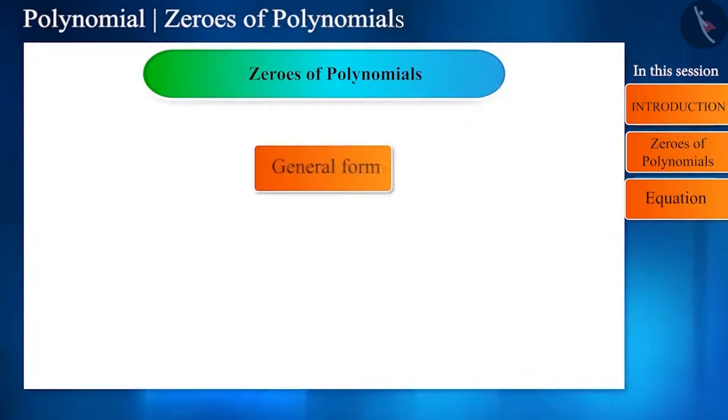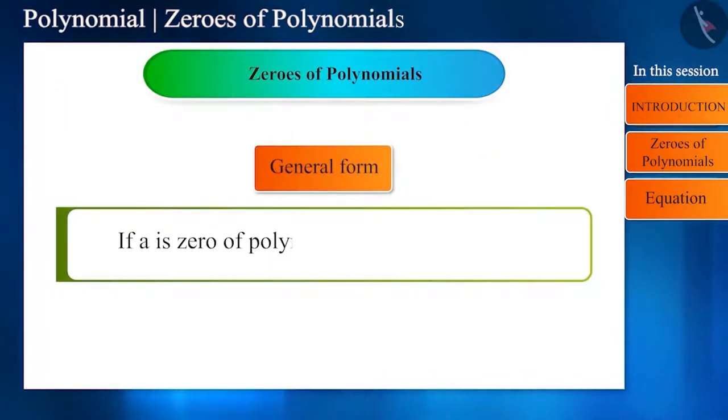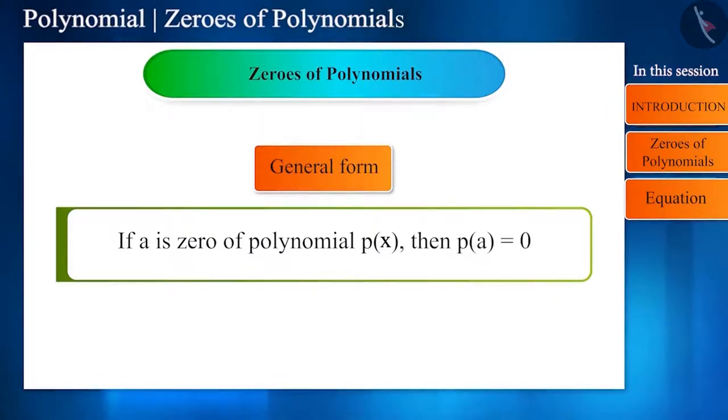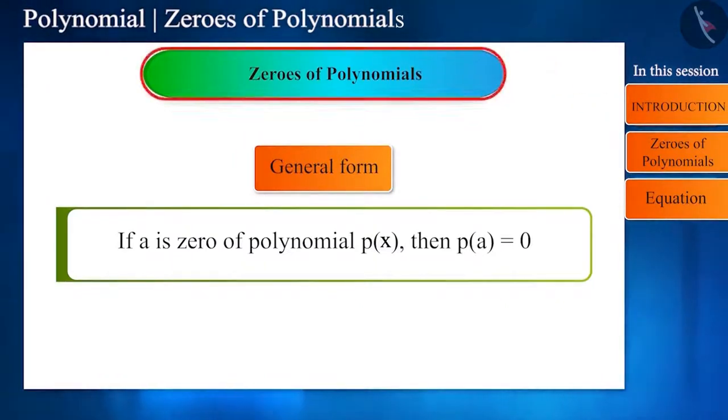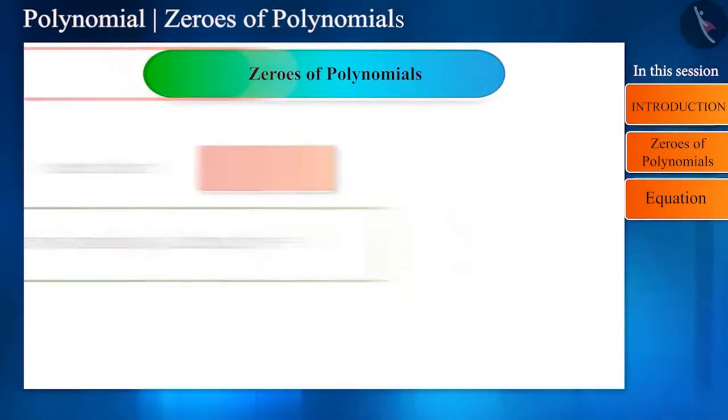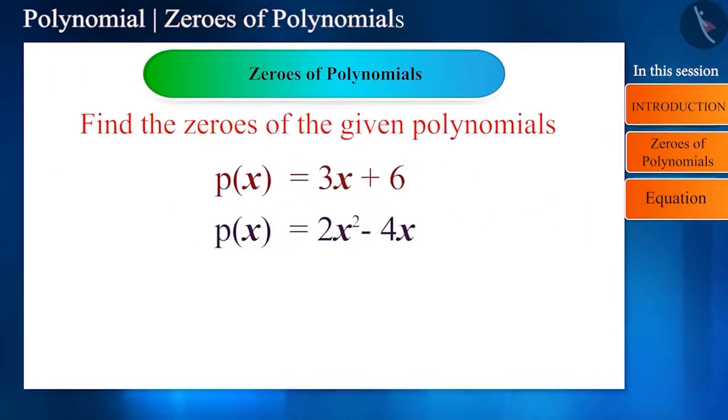Speaking in simple form, the zero of the polynomial p(x) is a number a by which p(a) becomes zero. And this is our topic today. So let's take some polynomials and find their zeros.